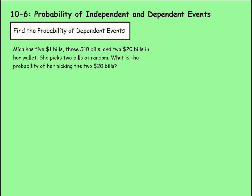Now let's find the probability of dependent events. It says Micah has five $1 bills, three $10 bills, and two $20 bills in her wallet. She picks two bills at random. What is the probability of her picking the two $20 bills? So she has five $1 bills, three $10 bills, and two $20 bills. So if we're looking at theoretical probability, the total number of outcomes are five, six, seven, eight, nine, ten. So we put that on the bottom.